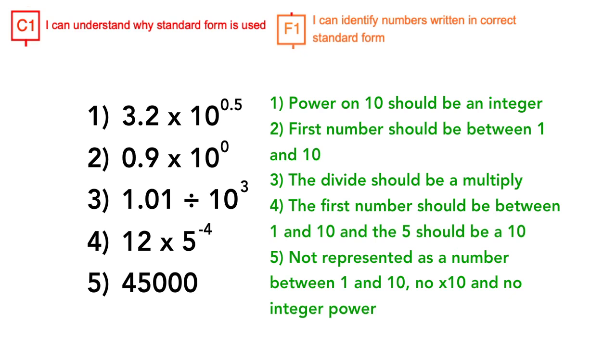The next question, the number is being divided instead of being multiplied. The following question, the first number is greater than 10 instead of being between 1 and 10 and it's being multiplied by 5 instead of being multiplied by 10.